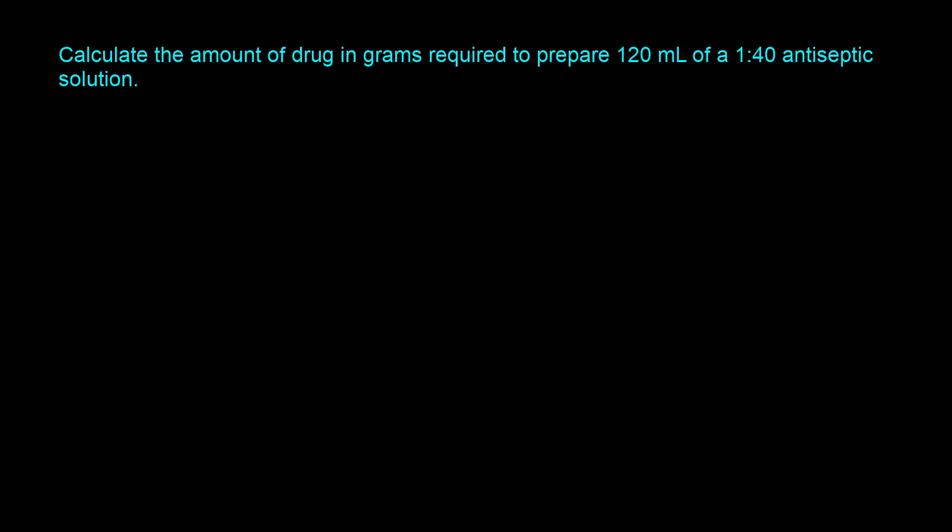The question says calculate the amount of drug in grams required to prepare 120 milliliters of a 1:40 antiseptic solution. Now the first thing we want to do is recall the definition of ratio strength. So our ratio strength here is 1:40. This is a solution so it actually means you have 1 gram in 40 milliliters.